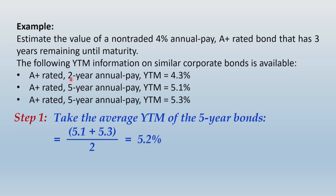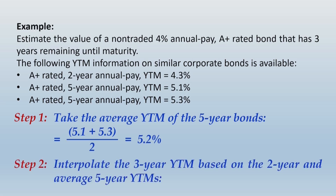We want the YTM to be estimated for a 3-year bond. So we will use interpolation. The second step will be to interpolate the 3-year YTM based on the 2-year and the average 5-year YTM.